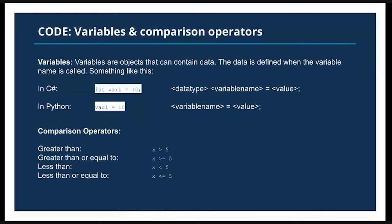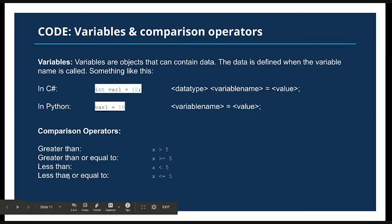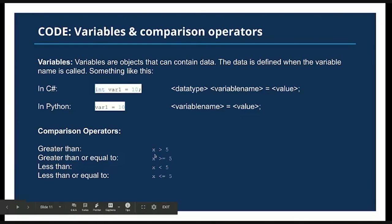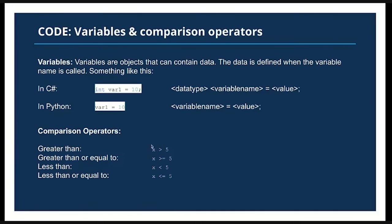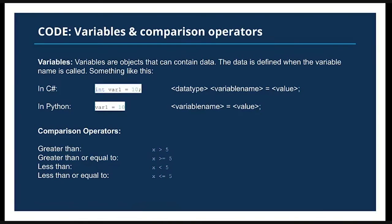Now we're going to talk about comparison operators. The first four examples — greater than, greater than or equal to, less than, less than or equal to — only really work on data types that are numerical values. Imagine you have a variable storing a value in x, and something is tracking that value because it will change. You could set up conditions or if statements that check what state x is in: if x is greater than five, if x is less than five — and it will run everything within the if block if the value of x meets those comparisons.